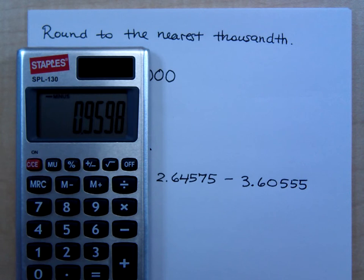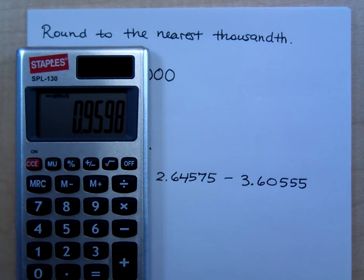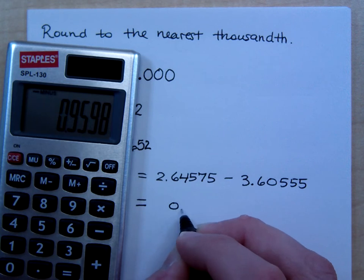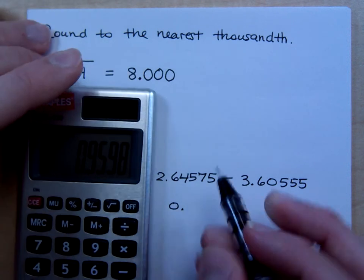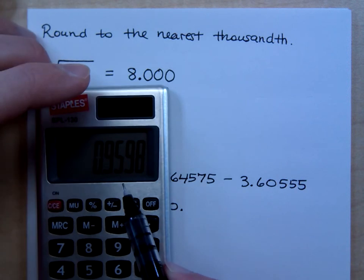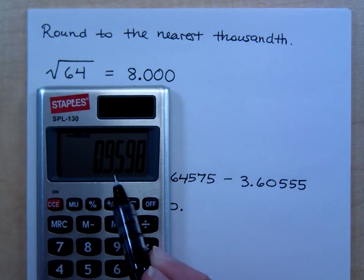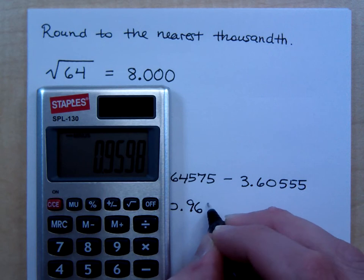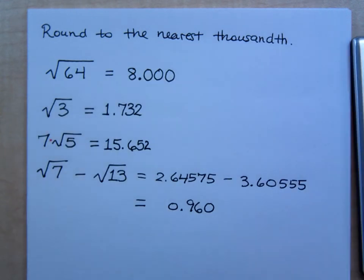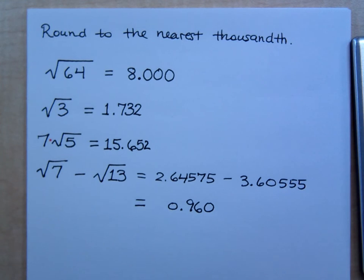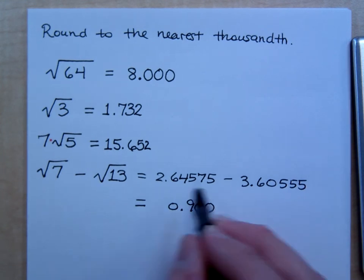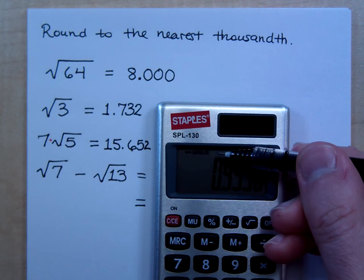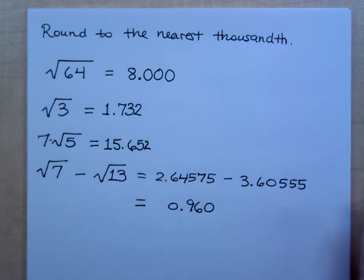So 2.64575 minus 3.60555. So what's my answer rounded to the nearest thousandth? So here's my thousandth spot. So the 8 tells me I need to round up, so that'd make this guy become a zero, but you have to kind of add that back. So 959 becomes negative 0.960. Do you all agree? See, I don't though. I don't agree with my answer. Why do I not agree with my own answer? My answer should be negative, right? See, this minus that, and you... Look here on the calculator display. It even says minus right here. What were you guys thinking?